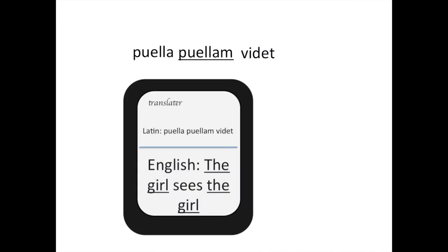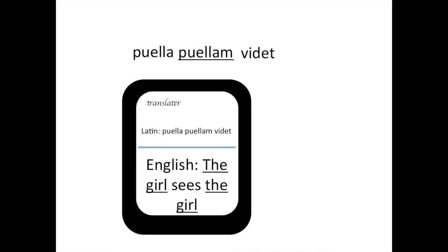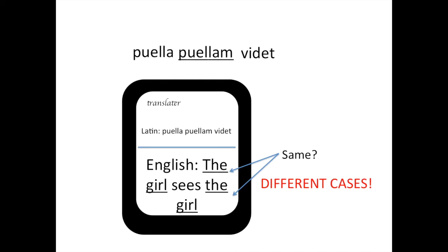So you get out your smartphone, you put it in your translator, and then it says something like this: 'The girl sees the girl.' So 'puella' means the girl and 'puellam' also means the girl. How come? Why does it have the same translation? Well, that is because they are in different cases — they're not different words, not different nouns, but they're in different cases.